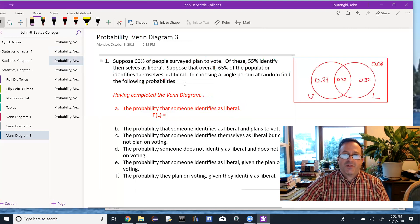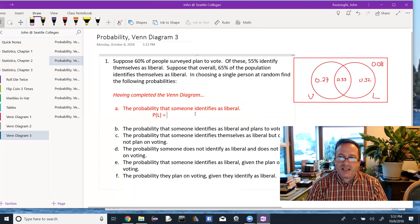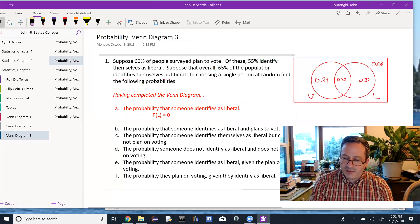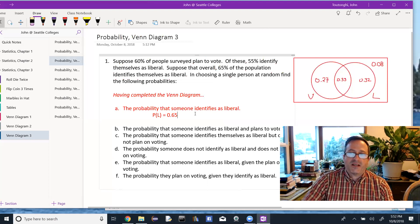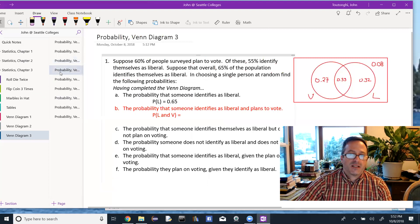And choosing one person at random, find the following probabilities. We've completed the Venn diagram, and now the probability that someone identifies as liberal, well, we didn't actually need the Venn diagram for that. We were told that 65%.